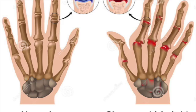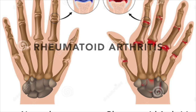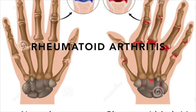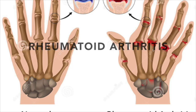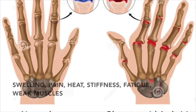First, let us explore what DMARDs are used for. DMARDs are commonly prescribed for rheumatoid arthritis, a chronic progressive autoimmune disease that causes systemic inflammation at the joints and destruction of bone and cartilage.